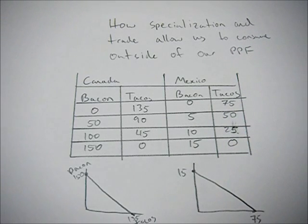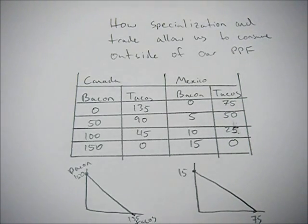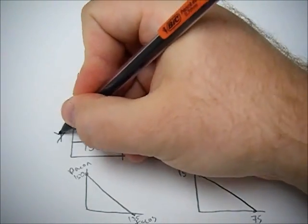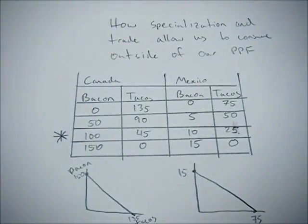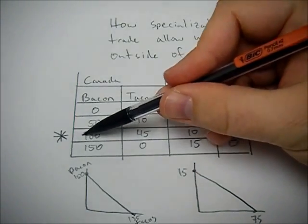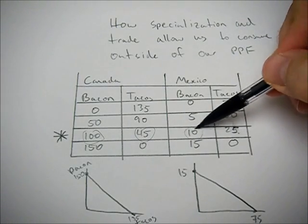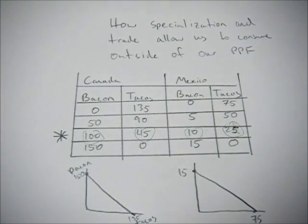So the key to this problem right now is deciding how much of each good they produce before they specialize. So I'm going to assume that they begin here. And Canada produces 100 bacon, 45 tacos. Mexico produces 10 bacon and 25 tacos.